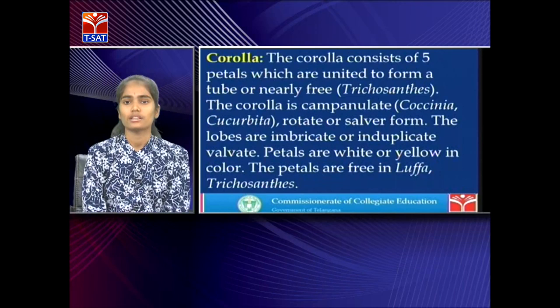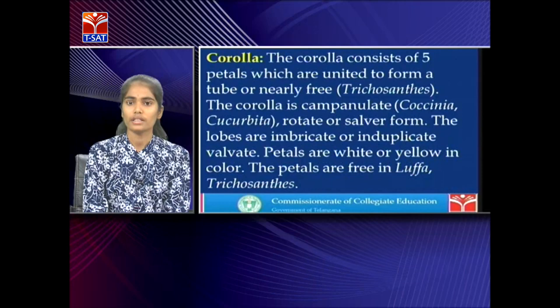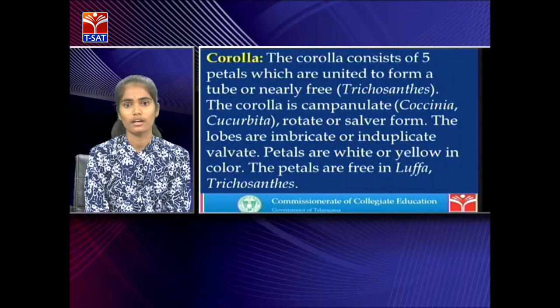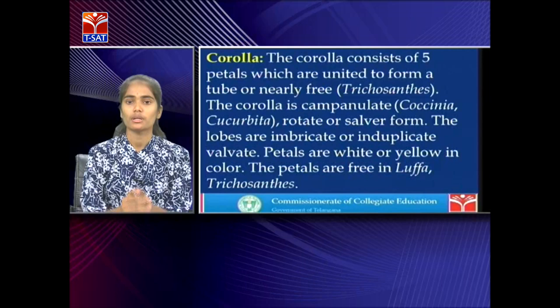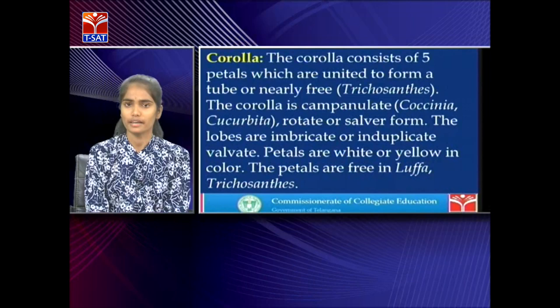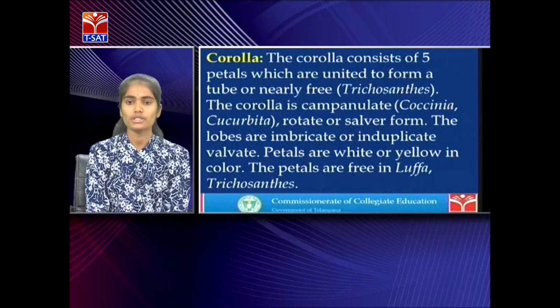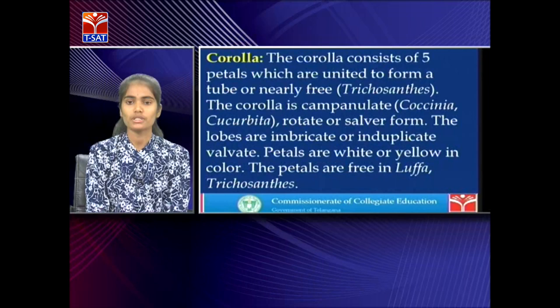The corolla consists of five petals united to form a tube, or nearly free in Trichosanthes. The corolla is campanulate (bell-shaped) in Coccinea or Cucurbita, rotate (short tube with petals at right angles), or salverform (long tube with petals again at right angles). The lobes are imbricate or induplicate valvate, meaning margins of flowers are bent towards the axis. Petals are white or yellow and mostly free in Luffa and Trichosanthes.